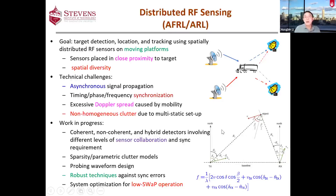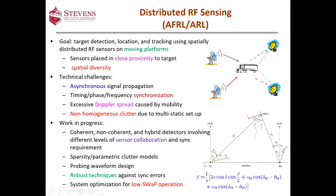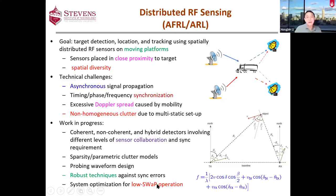We're also looking into mathematical models that take into account sparsity and parametric models for clutter mitigation. Since performance depends on what kind of signal you transmit, we're looking for appropriate signal waveform design. Since timing synchronization is a challenging issue, we're developing robust techniques that are insensitive to such synchronization errors. From our sponsor's point of view, they're interested in low-SWaP operations — particularly UAV operations with size, weight, and power limitations — so we have to do resource management optimization to provide the best system performance.